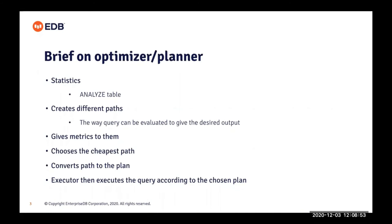Believe me, for a single query there are a lot of paths generated behind the scenes — paths with index, paths without index, paths with sorting, paths with various joins, paths with parallelism — and all of those are compared, and the cheapest one wins. Unfortunately, we cannot show each and every path that is considered to the user. We only show the final path which is chosen for execution, and that is what EXPLAIN gives you. We'll see, starting from the simplest path, how it is presented, and then we'll go into some more complex examples.